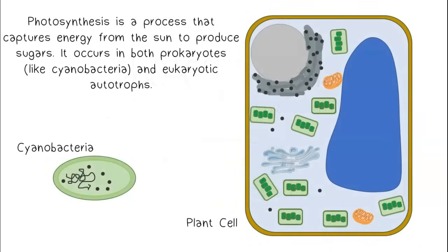Photosynthesis is a process that captures energy from the sun to produce sugars. It occurs in both prokaryotes like cyanobacteria and eukaryotic autotrophs.